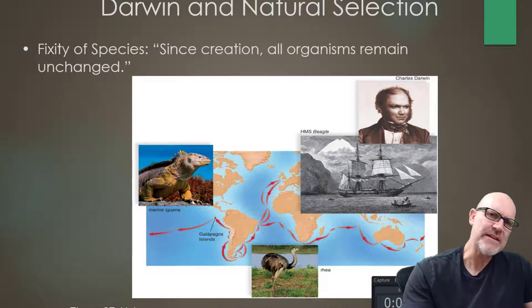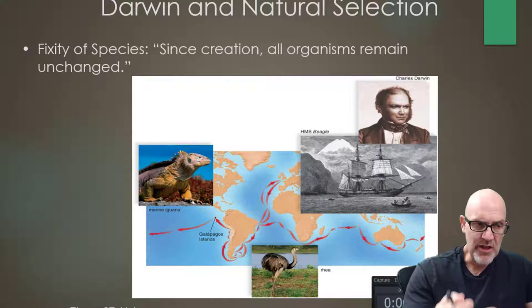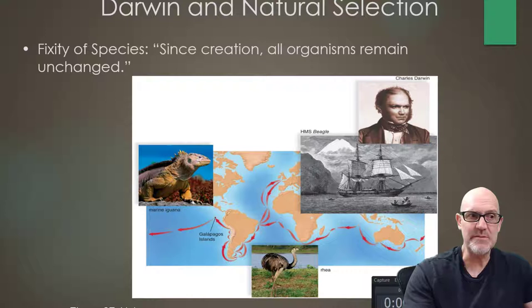When we think about it today, it's kind of a strange belief, but all Christian geologists, biologists, scientists, and even non-Christian ones believed in fixity of species because the Bible had so permeated science at the time. Darwin was no exception — he was a man of his time and he believed in fixity of species.